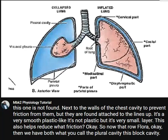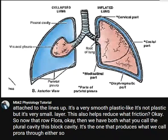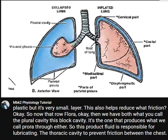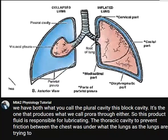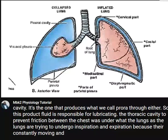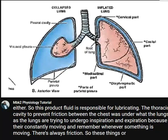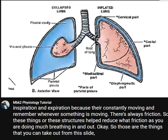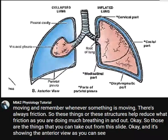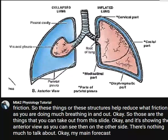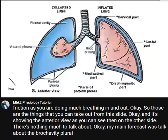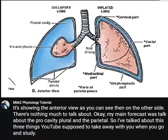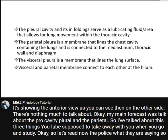We also have the pleural cavity, which produces what we call pleural fluid. This pleural fluid is responsible for lubricating the thoracic cavity to prevent friction between the chest walls and the lungs as they undergo inspiration and expiration, because they are constantly moving. Whenever something is moving there is always friction, so these structures help reduce friction as you breathe in and out. The main takeaways from this slide are the pleural cavity, visceral pleura, and parietal pleura.